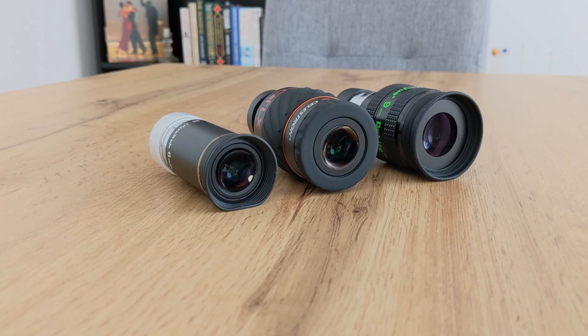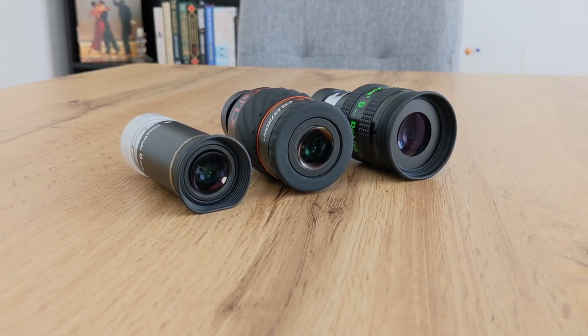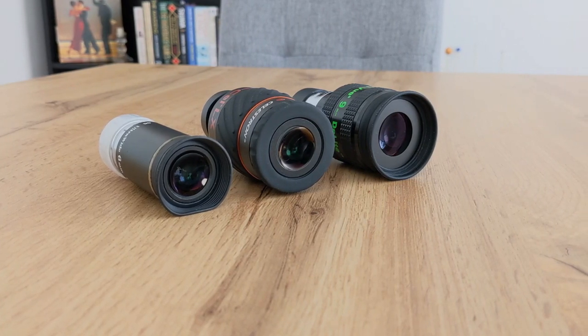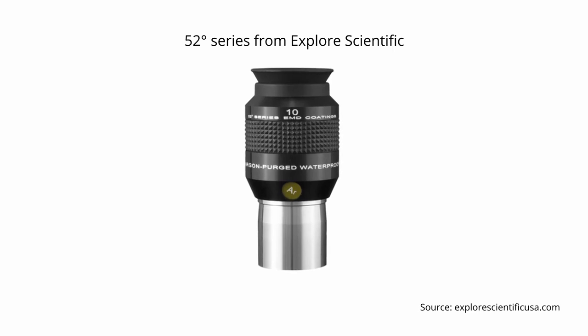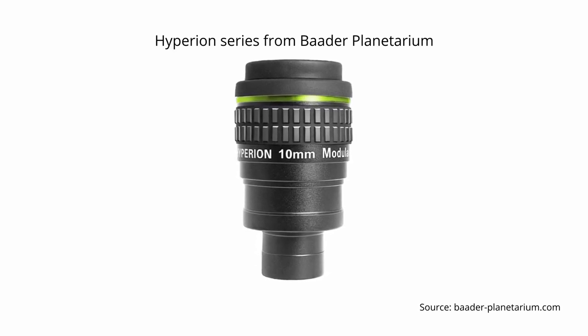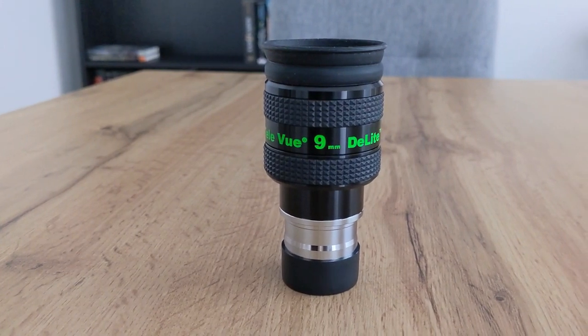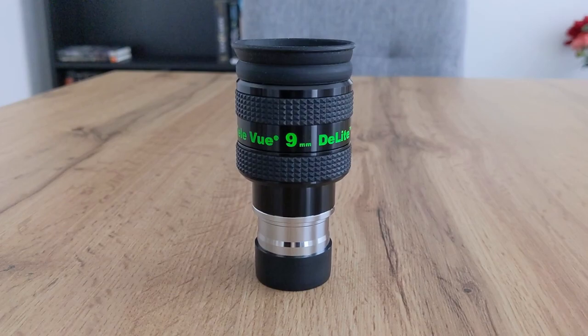The number of lenses inside an eyepiece is partially responsible for the eyepiece's brightness — typically, the more lenses an eyepiece has, the dimmer the image can be. So if you can, look for eyepieces with fewer lenses. For planetary observations, I really like the 52-degree series from Explore Scientific and the Hyperion series from Baader Planetarium — both offer great optics for a reasonable price. But if money is no issue, then you might want to take a look at the Delite series from Tele Vue, as it's regarded as one of the best eyepiece lineups for planetary observations.